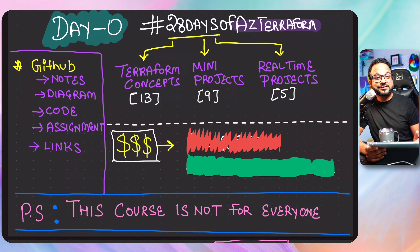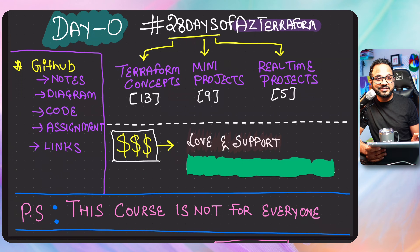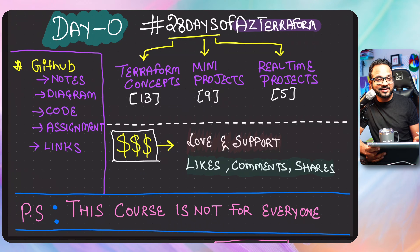Now the most important part — what is the price for this course? As I've told you, this course is not for everyone. There are two levels of prices. First is: all I need is your love and support — that's what you've always given me in all of the previous series and courses I've published. And then what I need is your likes, comments, and shares. Help me spread this content so that it can reach a wider audience so that everyone can benefit from it. And that's all I need — that's the price for this course.